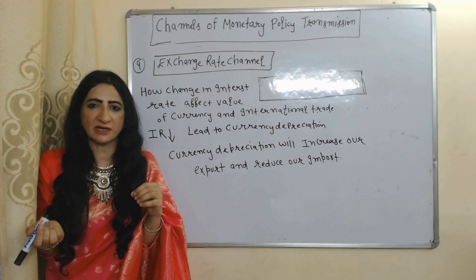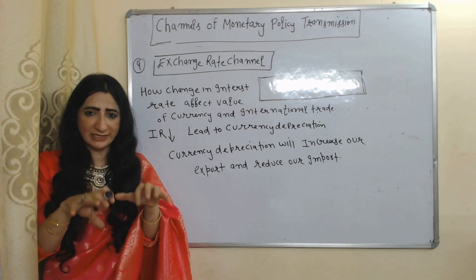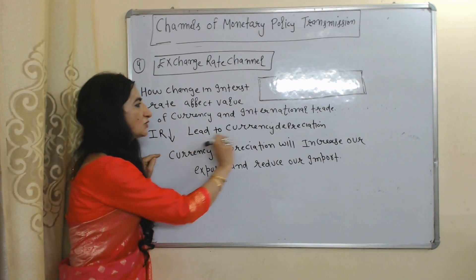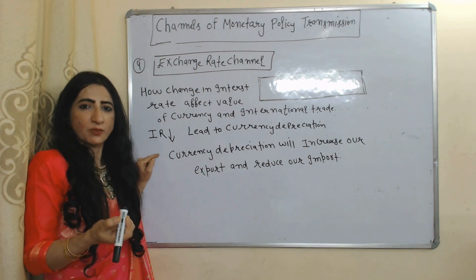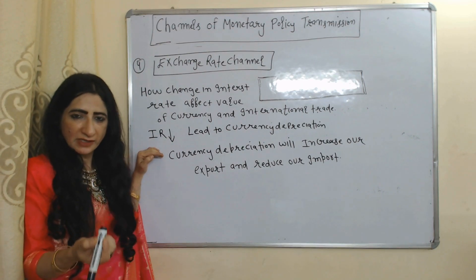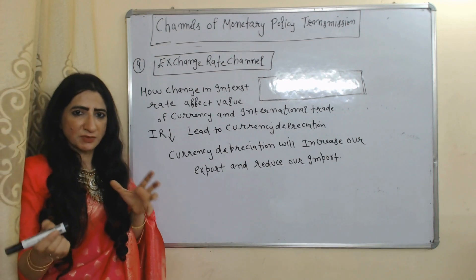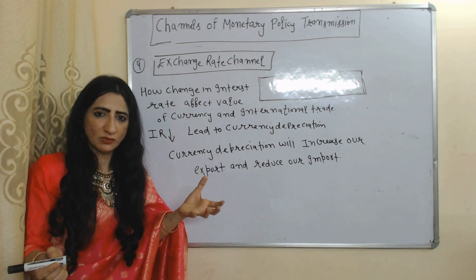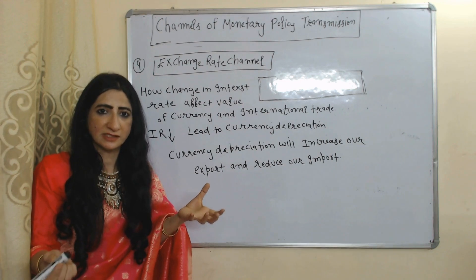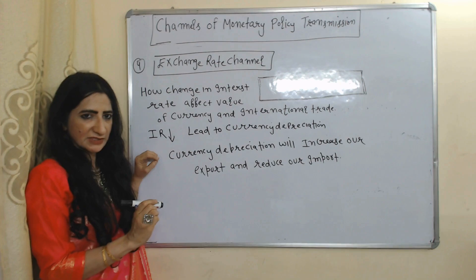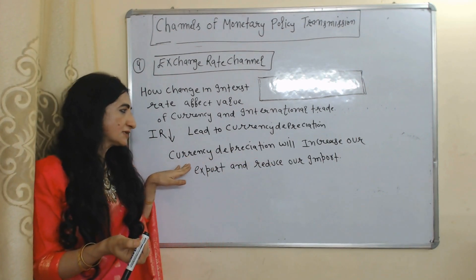The next channel is the exchange rate channel — monetary policy affects the value of currency and international trade. Suppose through monetary policy the central bank reduces interest rate, but lower interest rate leads to currency depreciation. Currency depreciation means the value of our currency falls. Why? Because at low interest rates, foreigners will not invest in our country — foreign investment reduces. If foreign investment reduces, demand for our currency reduces — if demand for our currency reduces, the value of our currency reduces. That's why lower interest rates lead to currency depreciation.